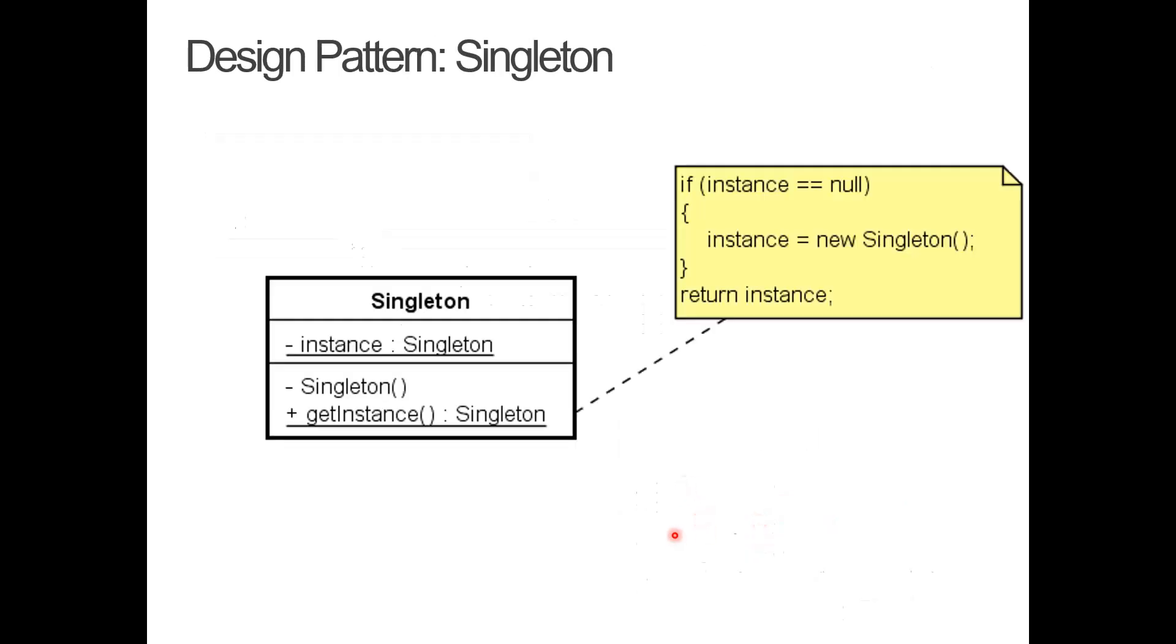So, inside the getInstance method, we use this lazy instantiation. There are many approaches to achieve this singleton functionality. And in this case, we use lazy instantiation. So, when I call from outside, I call this getInstance. We first check if this instance, our private field variable, if it is null, then we create it. So, the first time this method getInstance is called, then a new instance will be created. And then we can return the instance.